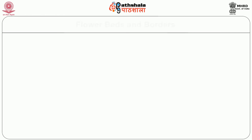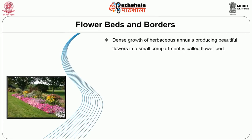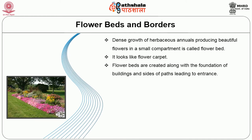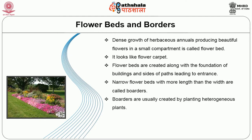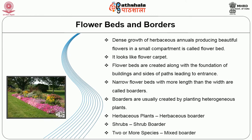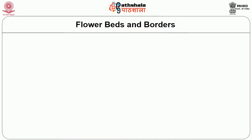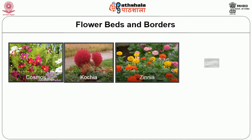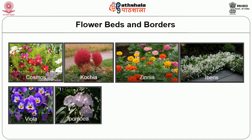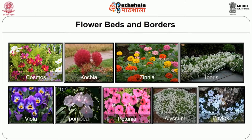We will see about flower beds and borders. Dense growth of herbaceous annuals producing beautiful flowers in a small compartment is called a flower bed. It looks like a flower carpet. Flower beds are created along the foundation of buildings and sides of paths leading to entrances. Narrow flower beds with more length than width are called borders. Borders are usually created by planting heterogeneous plants: herbaceous border uses herbaceous plants, shrub border uses shrubs, and mixed border uses two or more species. Important plants suitable for flowering beds are cosmos, celosia, zinnia, ibis, viola, phlomis, petunia, alyssum, phlox.